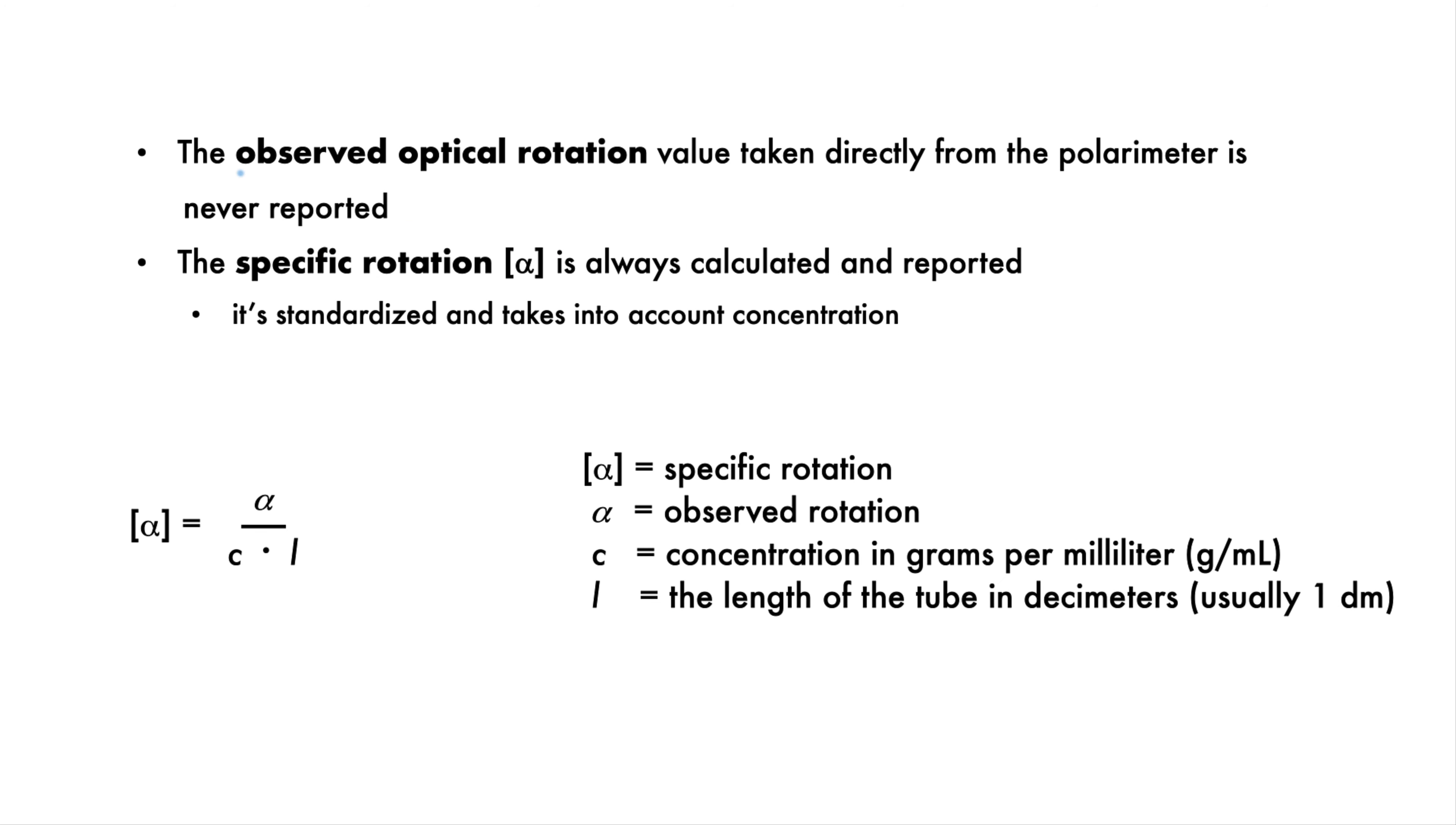When you do an actual measurement on a polarimeter, you get an observed optical rotation. The observed optical rotation is never reported because it depends on the concentration of the sample and the length of the sample tube. Obviously, the more concentrated the sample, the more rotation you would expect. This is because the light will encounter more molecules and be rotated more.